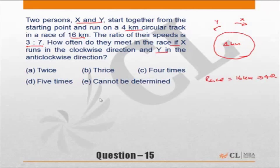So let me assume they are meeting here. When they are meeting here, Y has covered distance up to here from the starting point and X has covered distance up to here from the starting line, or together they have done one round.